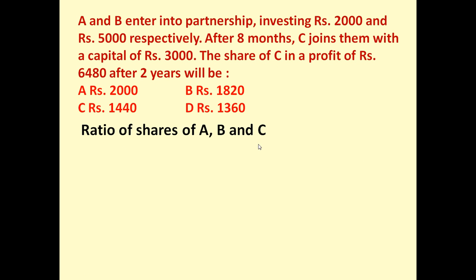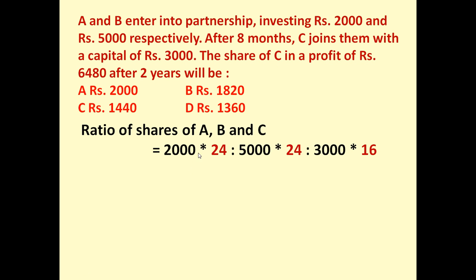The ratio of shares of A, B and C: A invested rupees 2000 for 24 months, B invested rupees 5000 for 24 months. But C joins them after 8 months, so C invested rupees 3000 for 16 months only.